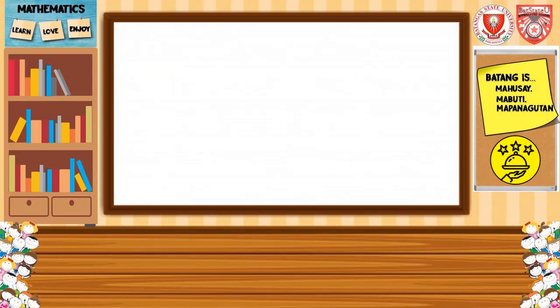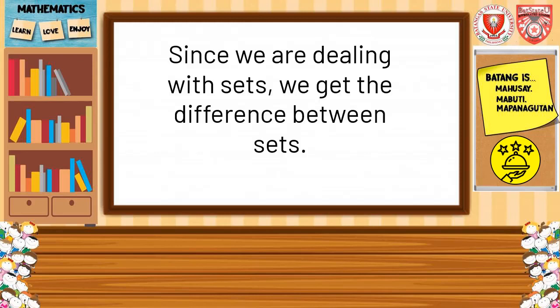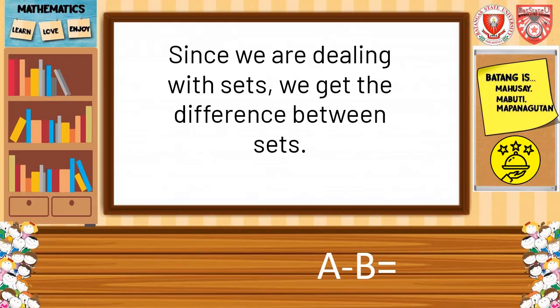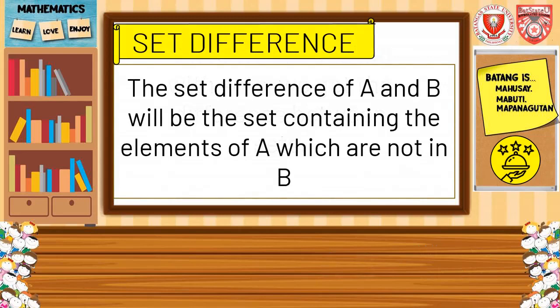As we have mentioned before, when we take away something from a given value, we get the difference. Since we are dealing with sets, we get the difference between sets. Like the basic difference — we say 9 minus 3, which means we will take away 3 from our original 9, and our answer will be how many is left. Similarly, when we say A minus B, we take away the elements of B which are in A. Then our answer will be whatever is left in A. That means the set difference of A and B will be the set containing the elements of A which are not in B.